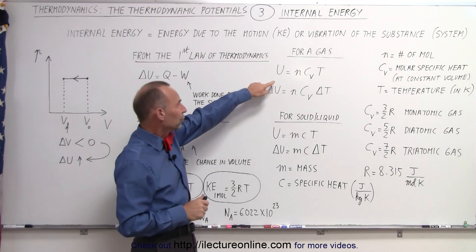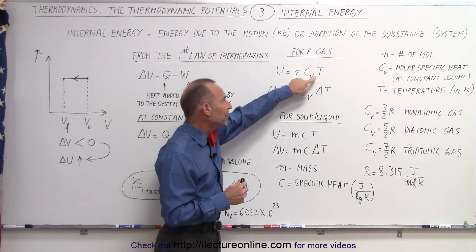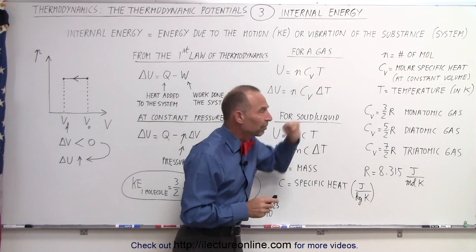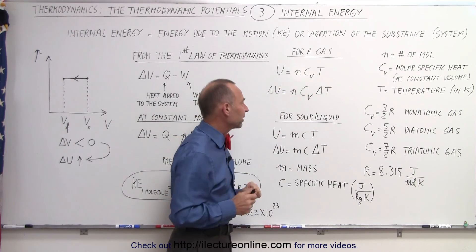So for a gas, the internal energy is defined by the letter U, and it's equal to N C sub V times T. N is the number of moles. C sub V is what we call the molar-specific heat at constant volume, and T is considered the temperature in Kelvin.